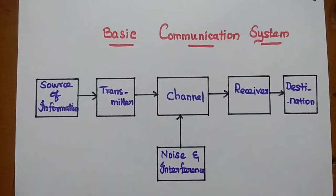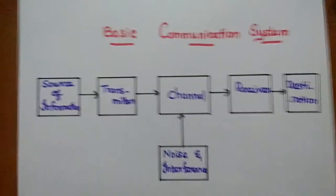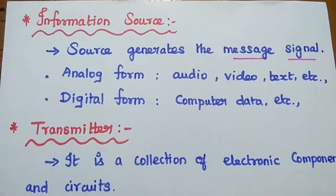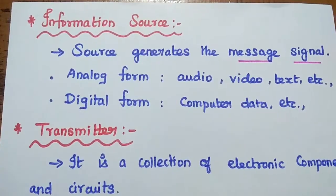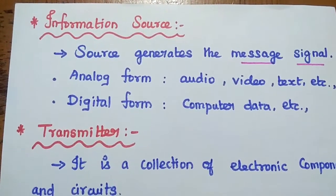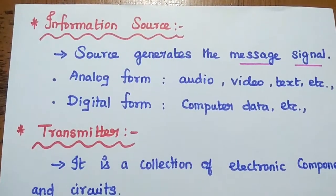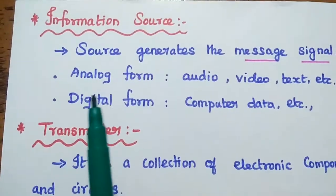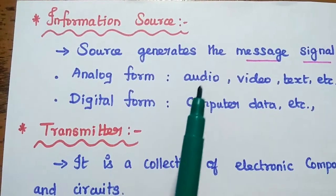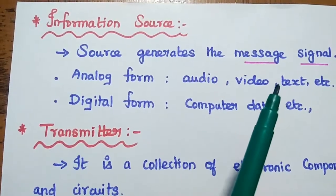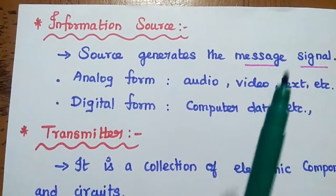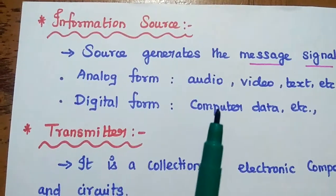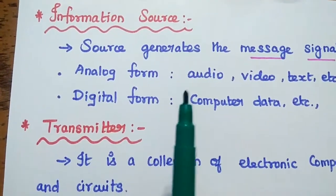Let's discuss each block in detail. The information source generates the message signal. The original information signal can be either in analog form or digital form. In analog form, we can consider human voice — audio, video, text, picture, and so on. In general, all natural signals are in analog form.